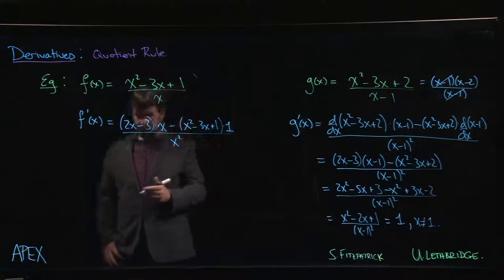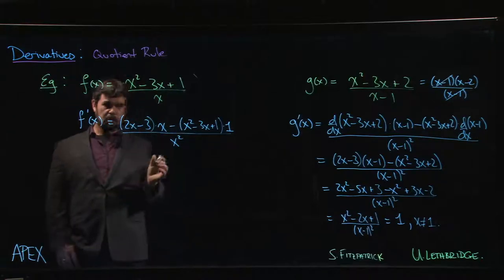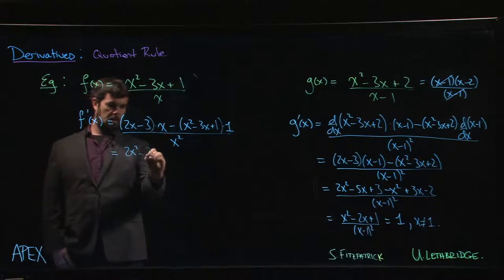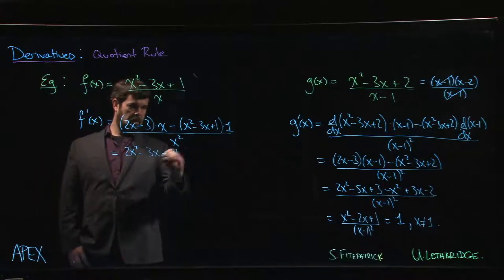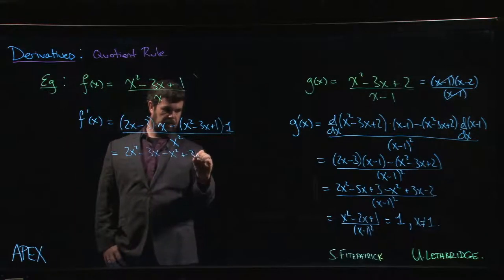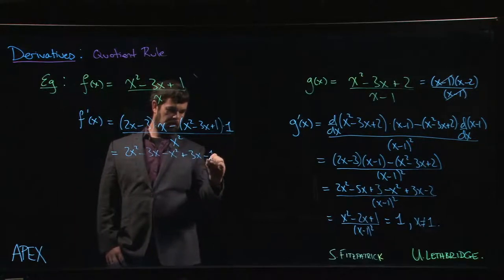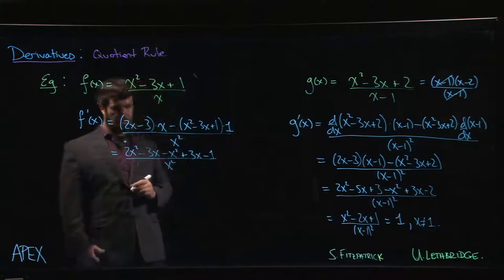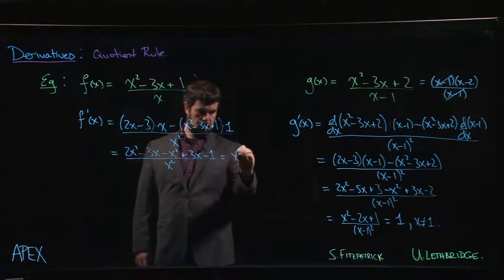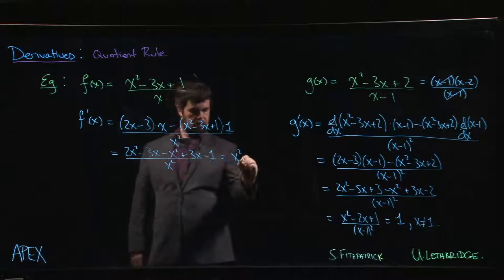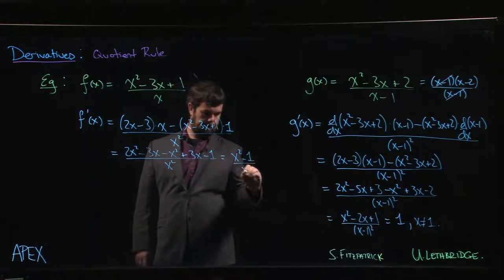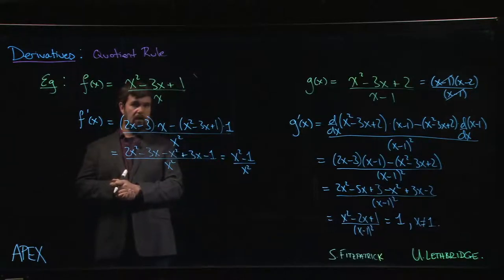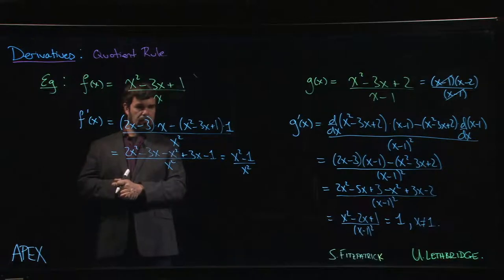And again, you can leave it like that if you want. If you are so inclined, you might choose to simplify. 2x squared minus 3x minus x squared plus 3x minus 1, all over x squared. So we have x squared minus 1 over x squared for our answer. Fair enough.